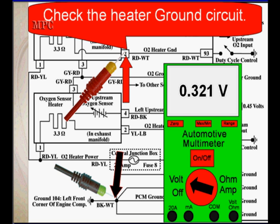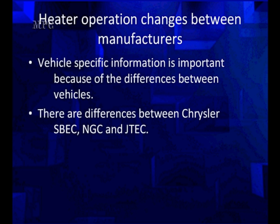Now, the first indication, anybody that knows us know that we like to see 50 millivolts in ground. This is 321 millivolts. But look just above the voltmeter to the right, and it says that ground has duty cycle control. So that may look like a bad voltage. That's why we use current flow. The heater operation changes between manufacturers. Vehicle-specific information is important because there are major differences. I'm going to show you using Chrysler between S-Spec, next generation controller, and JTEC, Jeep truck engine controller.